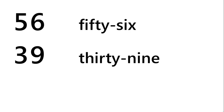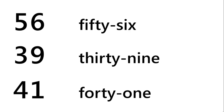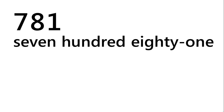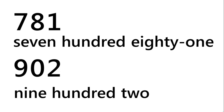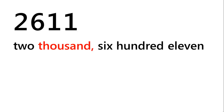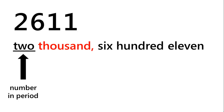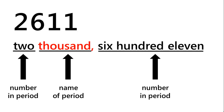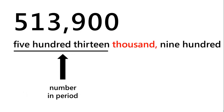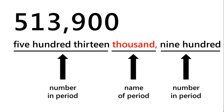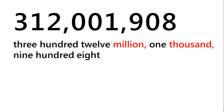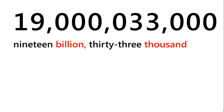Let's look at writing some other numbers. Notice that the number is followed by the name of the period it is in. We have 2,000 — the number in the period followed by the name of the period. For the ones period, we only say the number in the period. Examples include 513,900; 312,001,908; and 19,033,000.